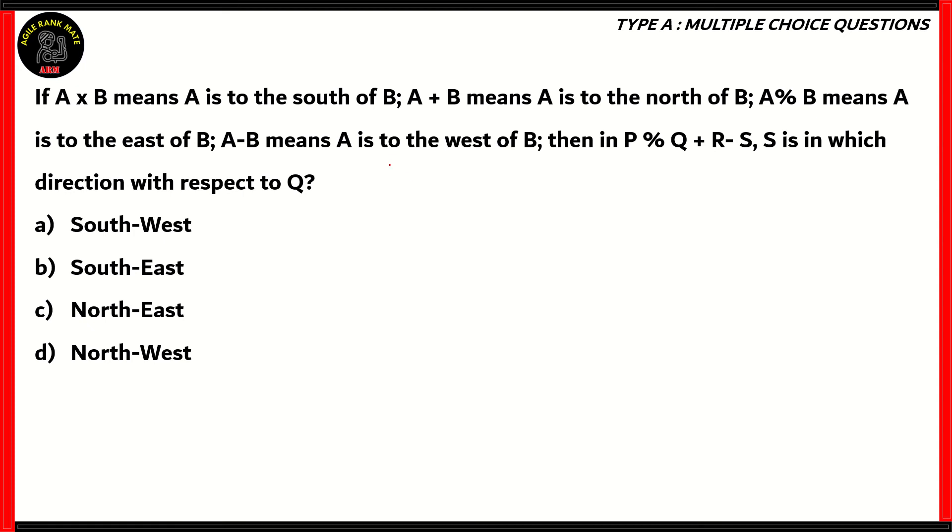Now let's look at this question. This one is referring to directions. If A cross multiplied by B means A is to the south of B. A plus B means A is to the north of B. A percentage B means A is to the east of B. A minus B means A is to the west of B. Then we have this particular series here consisting of P, Q, R, and S, and we need to find out the direction of S with respect to Q.